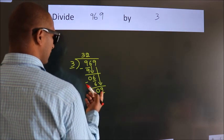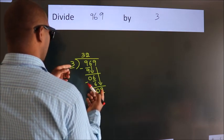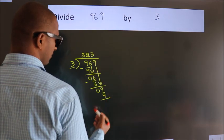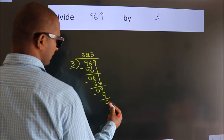When do we get 9? In the 3 table, 3 threes are 9. Now we subtract. We get 0.